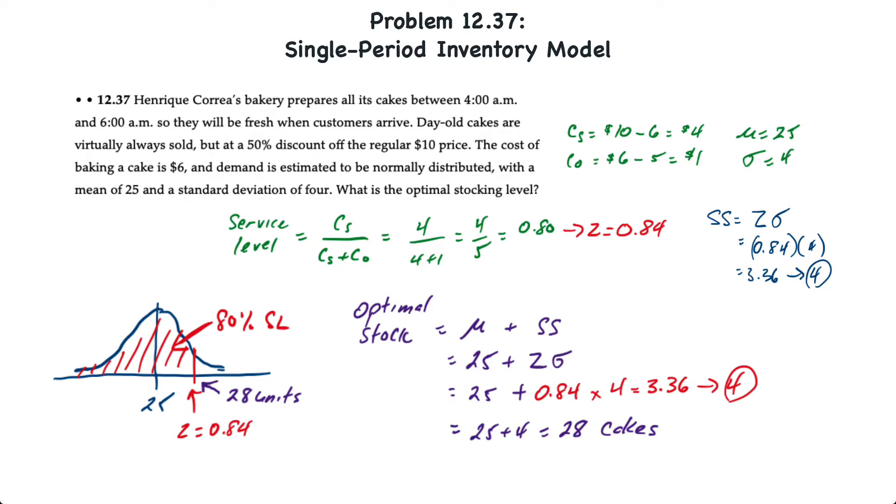So the number of cakes which would result in an 80% service level is a total of 28, which is therefore the optimal stock, comprised of the mean demand of 25 cakes plus 4 cakes of safety stock. And that's how you apply a single period inventory model.